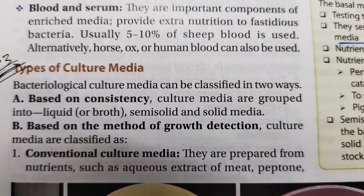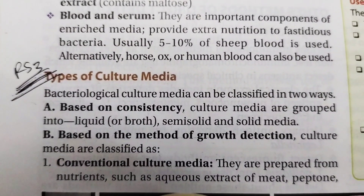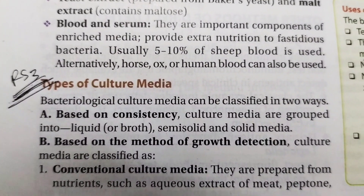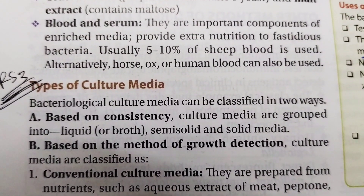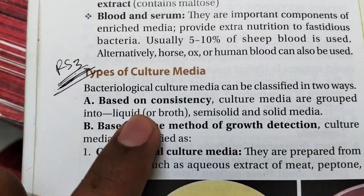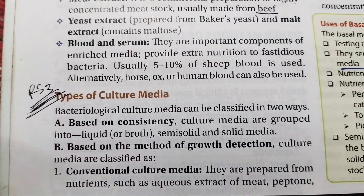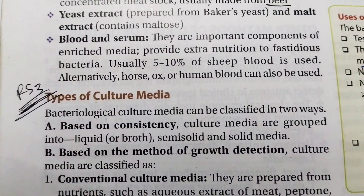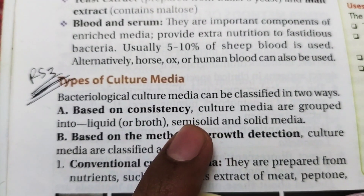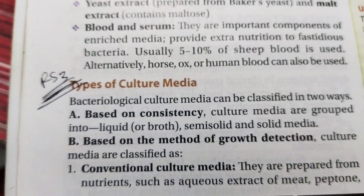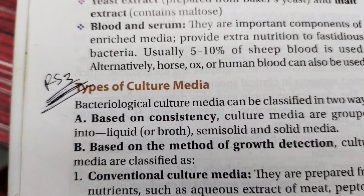Based on consistency, cultural media is divided into solid medium, semi-solid medium, and liquid medium. Liquid medium is also called broth medium. Every medium is initially a liquid medium and is then converted into semi-solid or solid by adding agar. Agar is a substance which converts liquid to semi-solid. If more agar is added it becomes solid. When you add 0.2 to 0.5 percent agar it becomes semi-solid. Agar does not provide any nutritional growth for bacteria — it just provides a solidified medium.